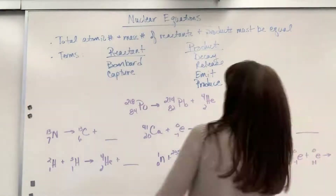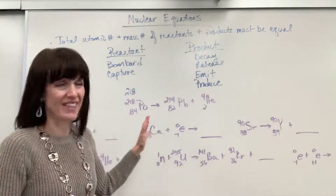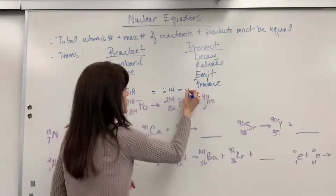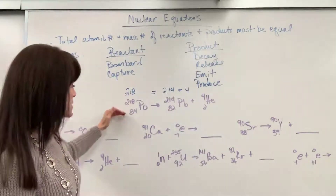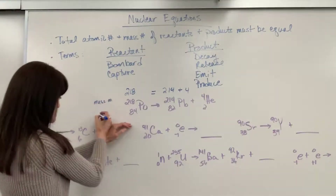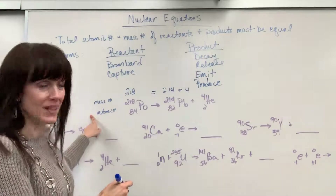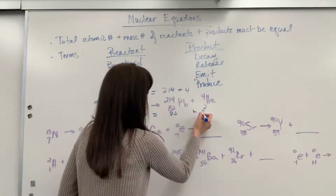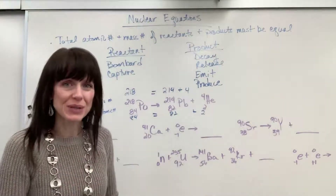Using a different color so you can see it: we have 218 as our mass number on the reactant side. It has to equal 214 plus 4. Check the math: 214 plus 4 equals 218. Now for atomic numbers — the top number is the mass number, the bottom is the atomic number. Mass number is neutrons and protons; atomic number is the number of protons. So we have 84 equals 82 plus 2. Sure enough, that equals 84. This is a balanced nuclear equation.